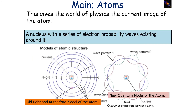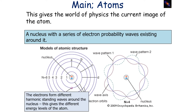This gives physics the current image of the atom: a nucleus with a series of electron probability waves existing around it. No longer do we have electrons orbiting the nucleus in fixed paths, or electrons existing in simple energy levels. Instead, we have a nucleus with electron wave patterns forming around it, where electrons form different standing harmonic waves around the nucleus, giving us our different energy levels.